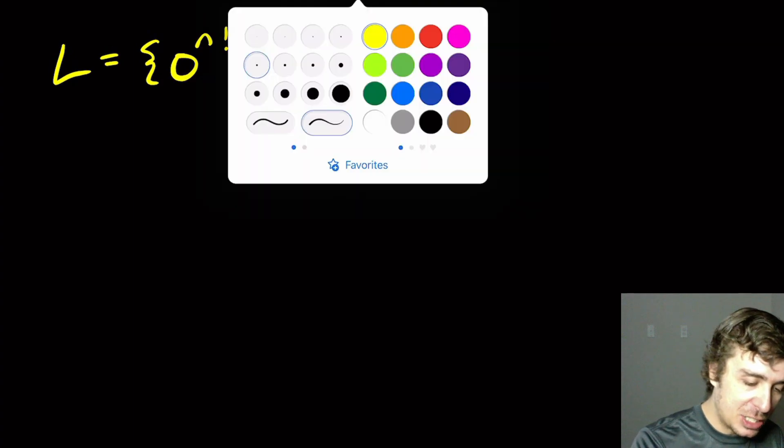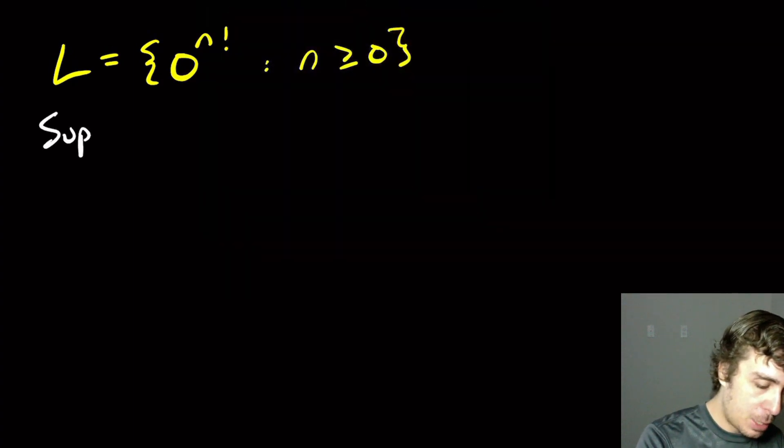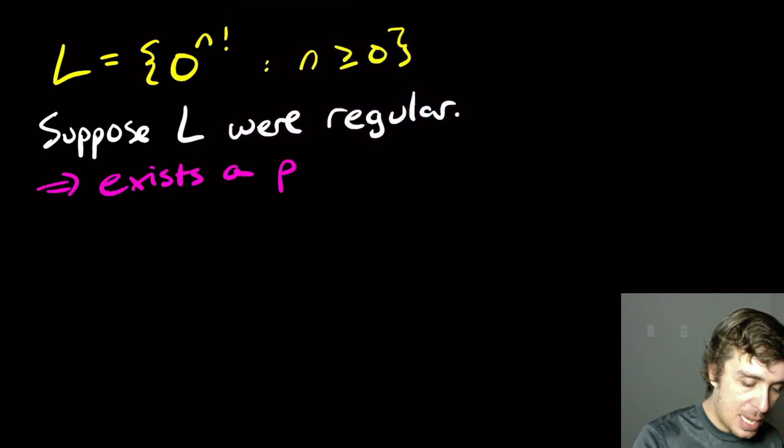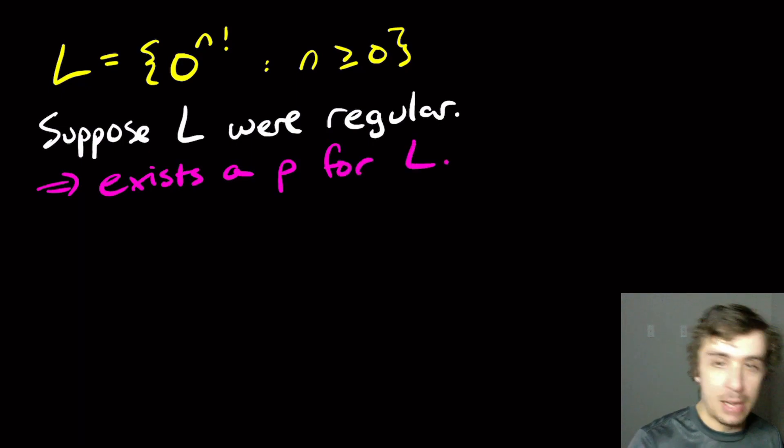So I want to show that this thing is not regular. So let's suppose that it were regular. Suppose it were regular, then that means that there exists a pumping constant P for L.